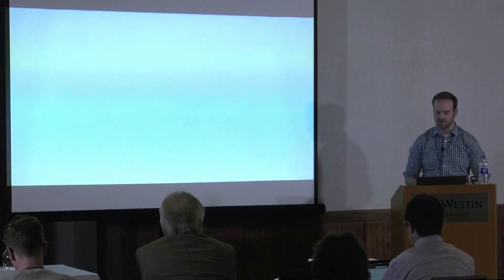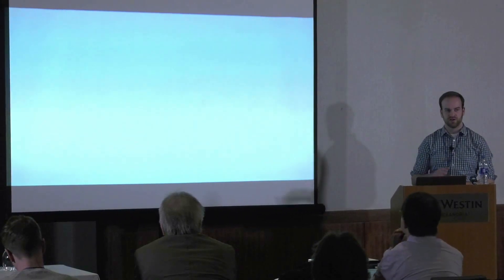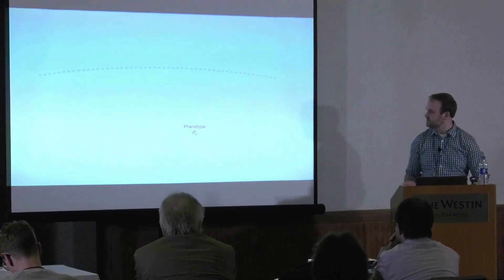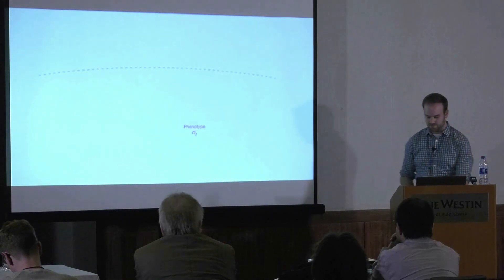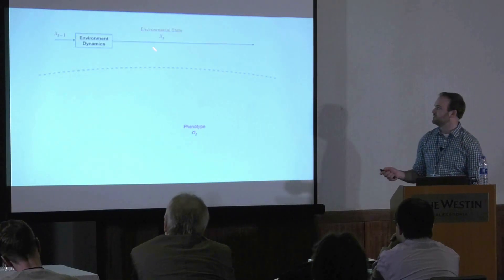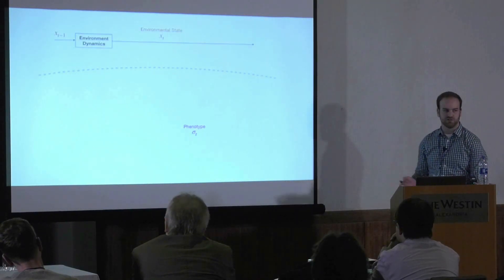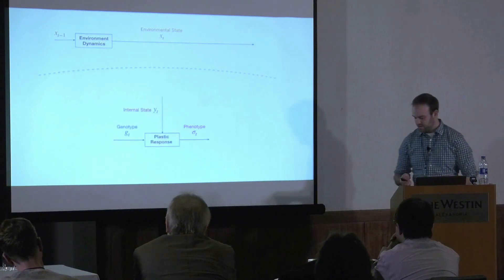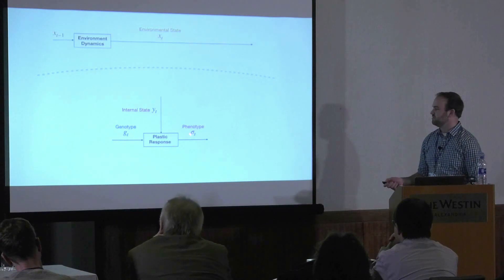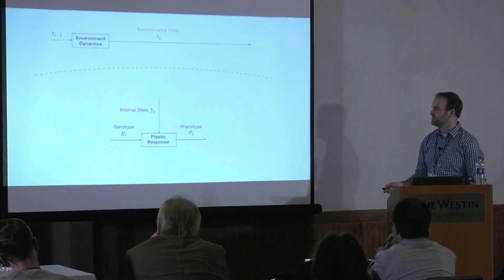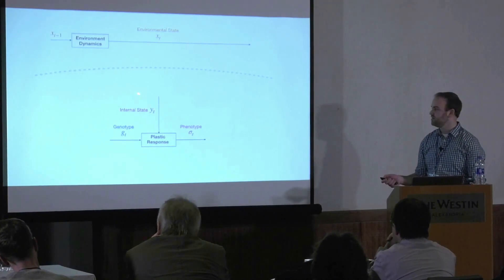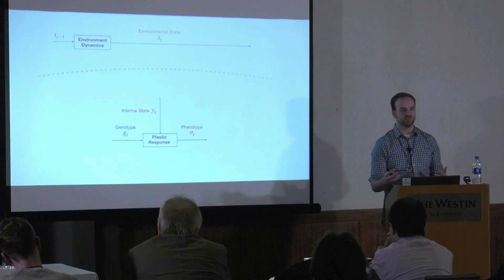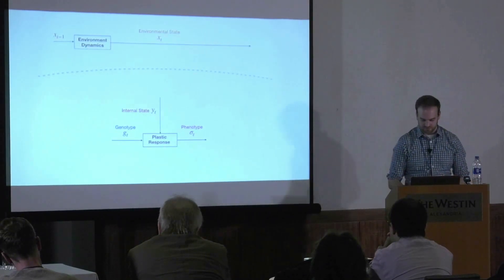To start, I'd like to give a sketch of an evolutionary framework that I use to motivate a lot of my questions in this area. So let's consider an organism that has some phenotype and that faces some environmental state that perhaps changes over time as the result of some stochastic or dynamical process. This phenotype of the organism is a product of its genotype and some internal state — a gene regulatory state, a neural state, a behavioral state, or what have you.